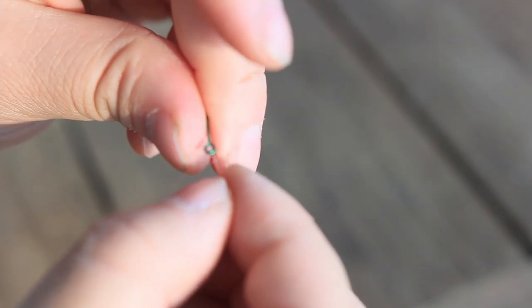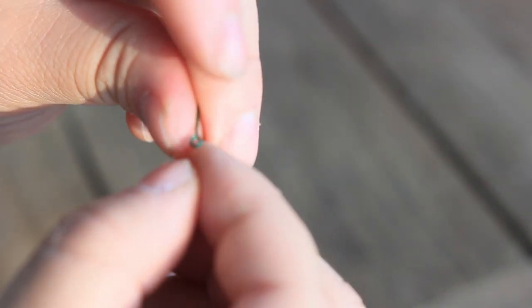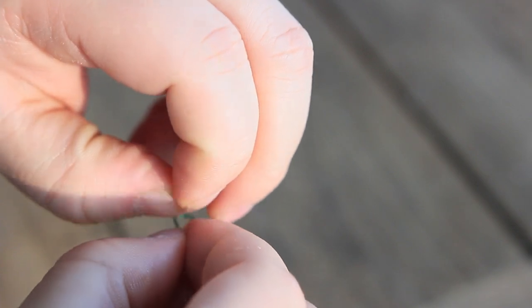Once you've looped it through, then you loop the fishing knot through the loop that you've created, not through the actual eye of the hook.